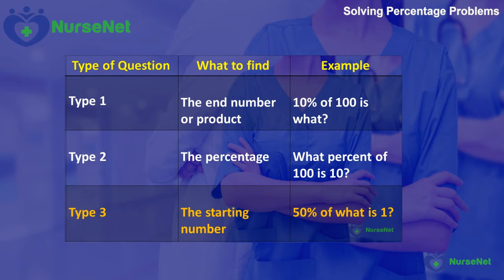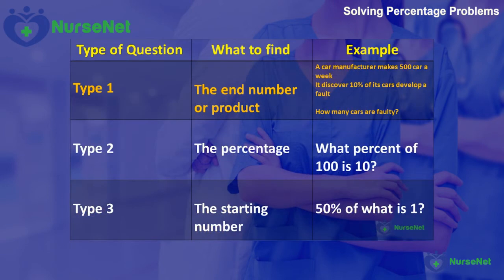Let's put these questions into context. If you stick with this, you'll be able to identify what a question is asking you in an exam situation, giving you both the knowledge and the confidence to answer correctly. An example of a Type 1 question: a car manufacturer makes 500 cars a week and discovers 10% of its cars have developed a fault. How many cars are faulty? The question is asking for the end number: 50 cars are faulty.